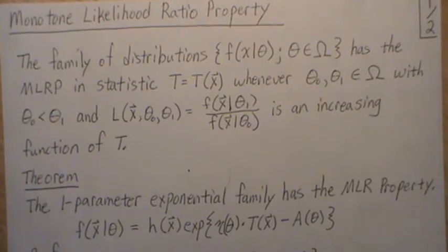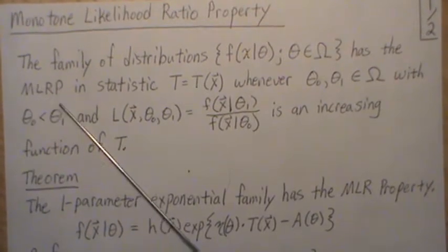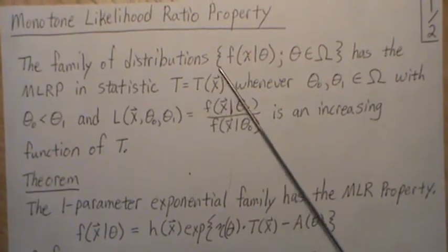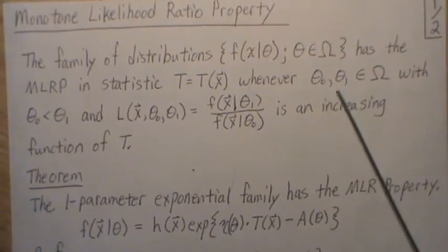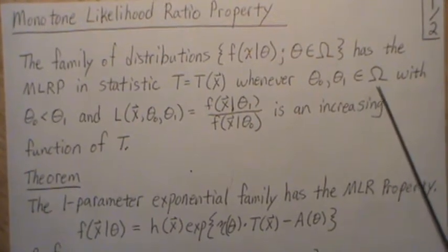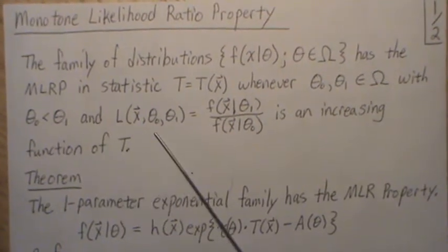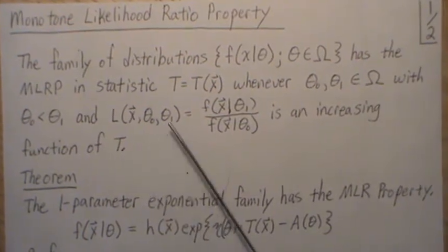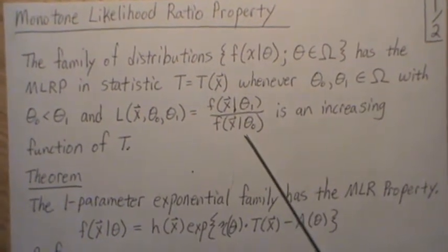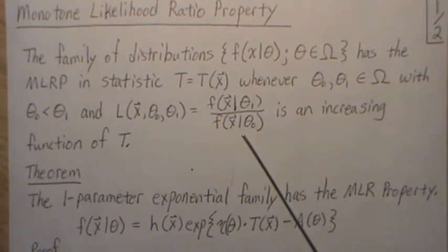The family of distributions f(x), indexed by theta in parameter space omega, has the monotone likelihood ratio property in the statistic T — which is a function of all our data — whenever theta_0 and theta_1 are in omega satisfying an inequality, and the likelihood ratio is an increasing function of T. Then we say this family has the monotone likelihood ratio property.